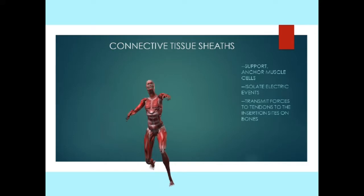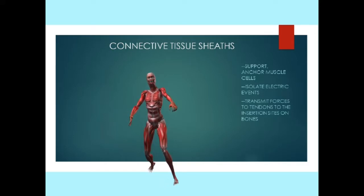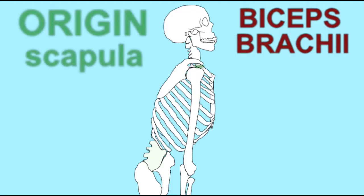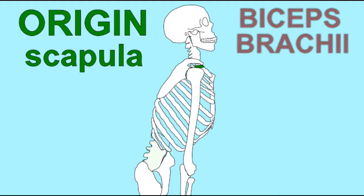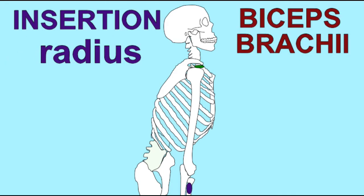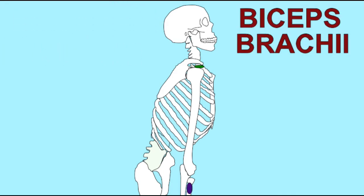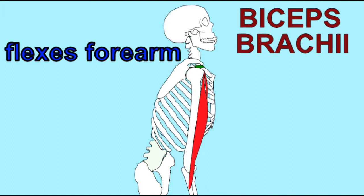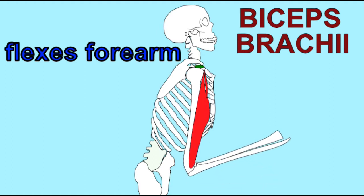They support and anchor muscle cells and groups of muscle cells, and together they are continuous and form the tendon, which then anchors into the bone so that the forces of contracting muscle cells are transmitted to the collagen fibers of these connective tissue wrappings, which are then transmitted into the bone.